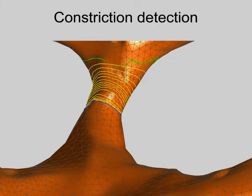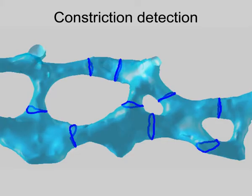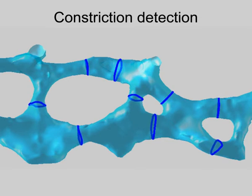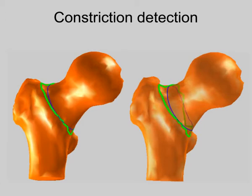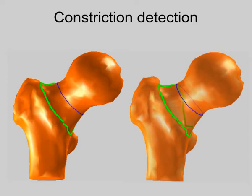As a final application, we demonstrate constriction detection. Finding the local constrictions of a thin structure often plays an important part in its analysis. In this case, the flow propagation should depend only on the curve length, and not on an attraction to any mesh feature. Here, constriction detection on a human femur bone is shown. The resulting curve is smooth, partially thanks to its ability to cut through the mesh edges, and is locally the shortest closed geodesic.